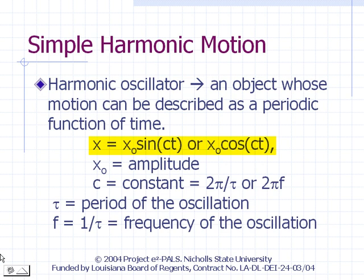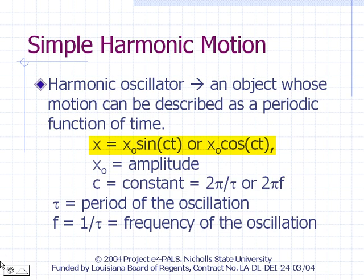To easily visualize the significance of the constant c, it is convenient to write it in the form 2 times pi divided by tau, or 2 times pi times f. Here, tau is the period of the oscillation, and f is the reciprocal of tau, the frequency.